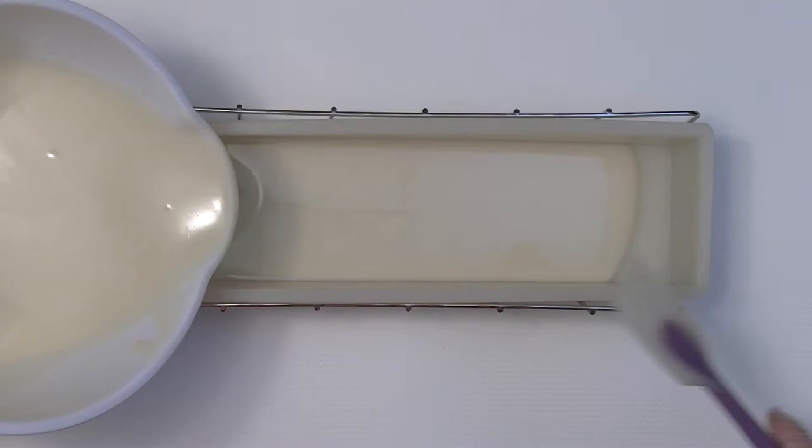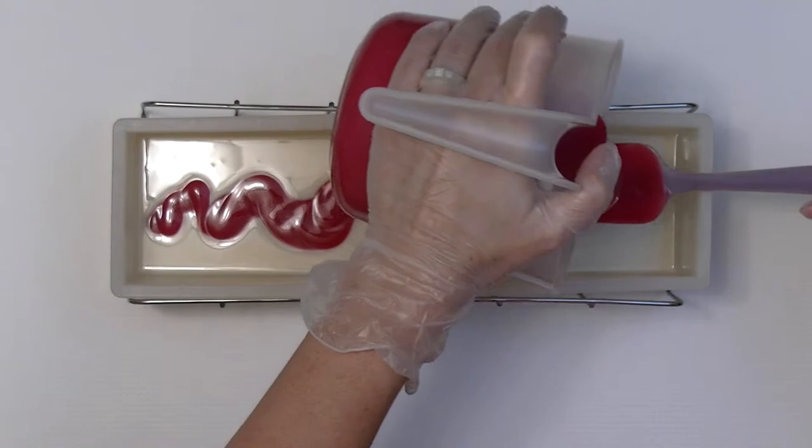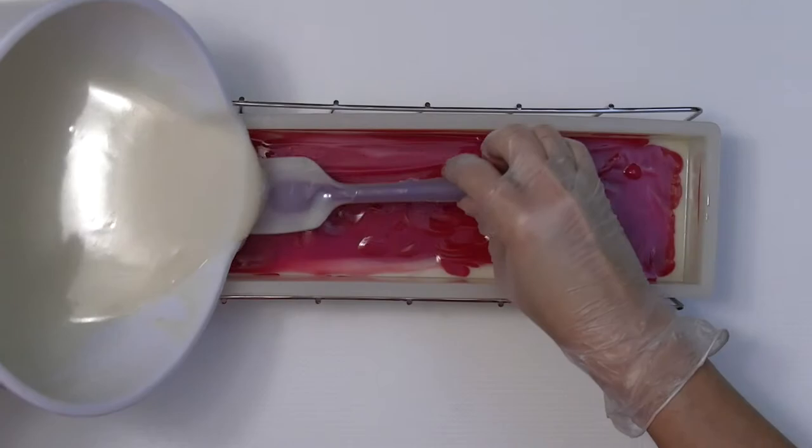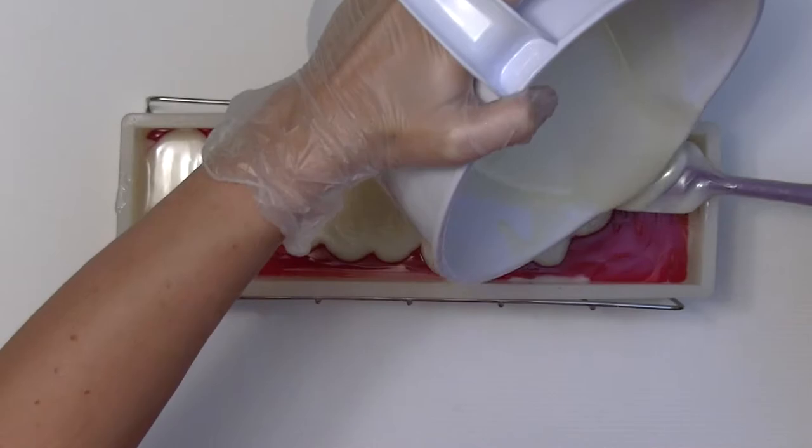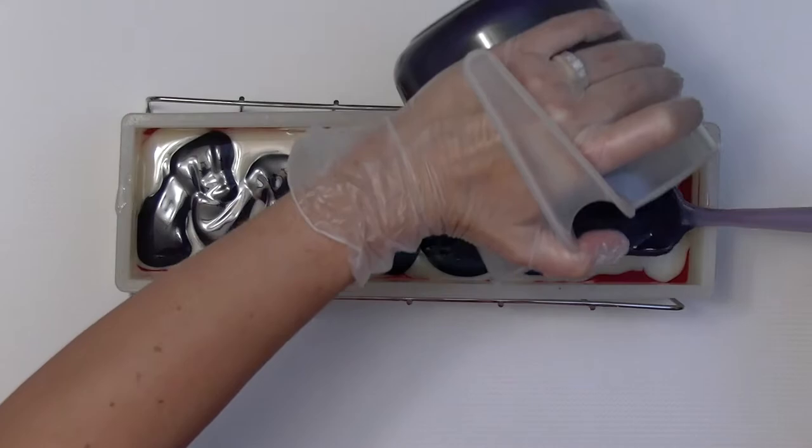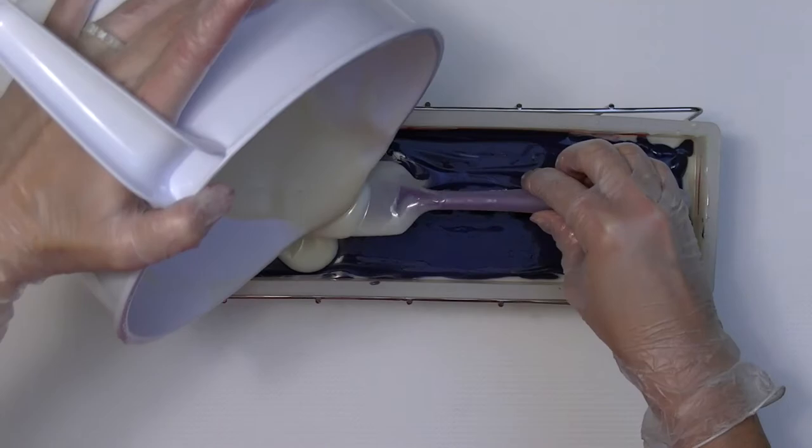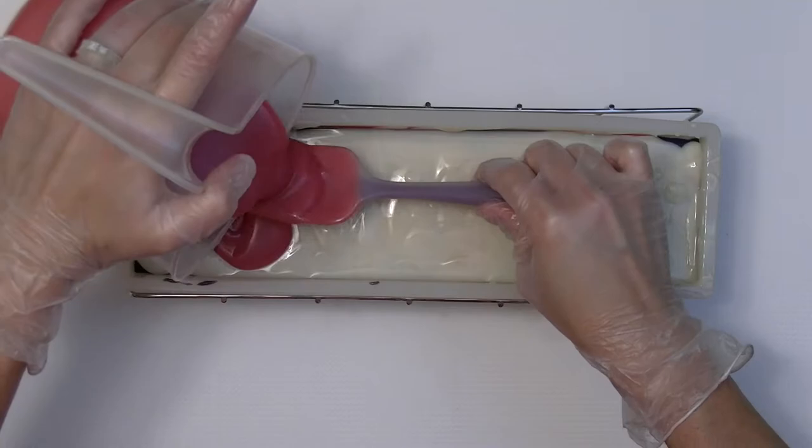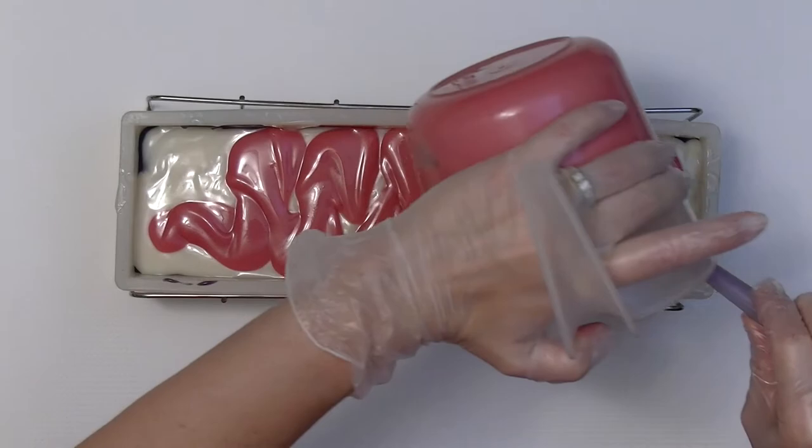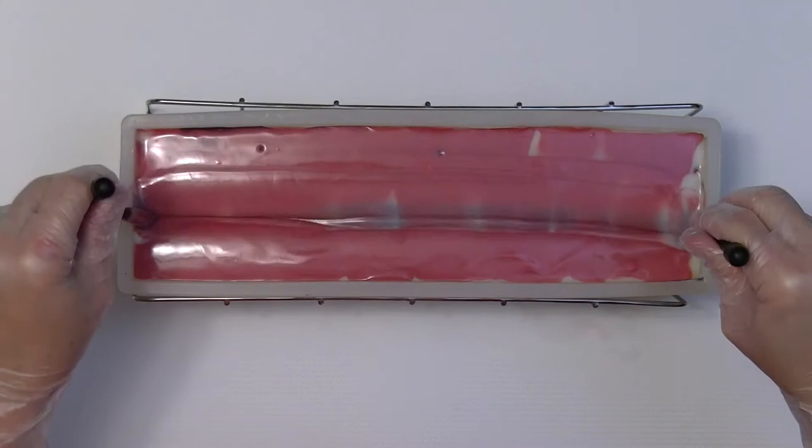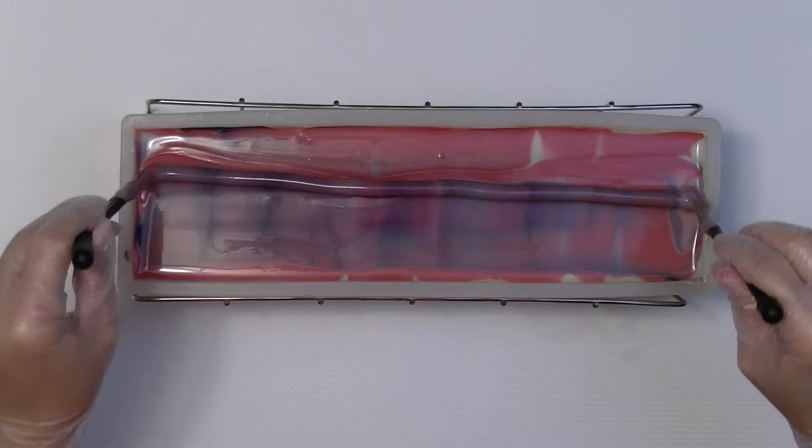Let's get this soap in the mold. I'll do a hanger swirl with my gear tie. A few taps for getting out bubbles and I'll add the extra soap on top.